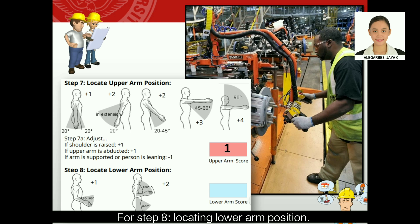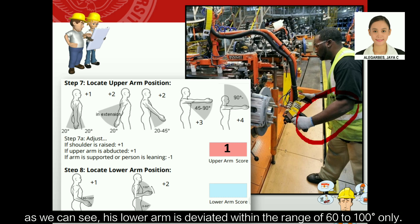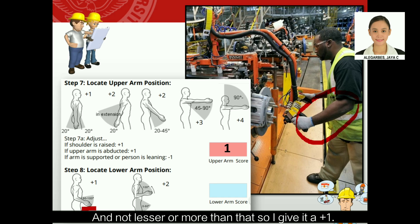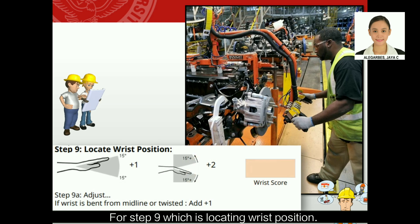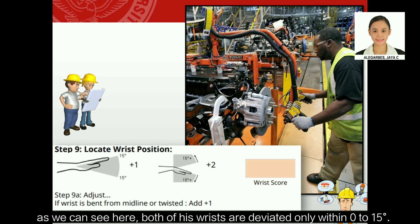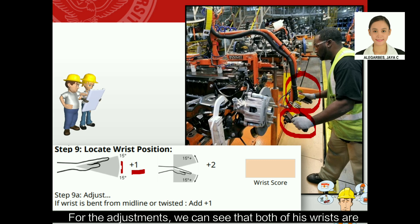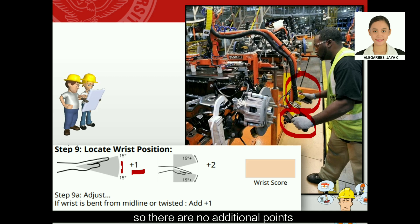For step eight, locating the lower arm position: the lower arm is deviated within the range of 60 to 100 degrees, so we give it a plus one. For step nine, locating the wrist position: both wrists are deviated only within 0 to 15 degrees, so we give it a plus one. Both wrists are neither bent from midline nor twisted, so there are no additional adjustment points, giving only a plus one for the wrist score.